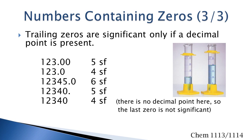Trailing zeros can or cannot be significant. They are significant only if a decimal point is present. So in the first number, there is a decimal point present, so you would count these two zeros. There is also a decimal point in the fourth number, so you would count that zero. In the bottom number, there is no decimal point present, so this trailing zero is not significant, and the number has four significant figures.